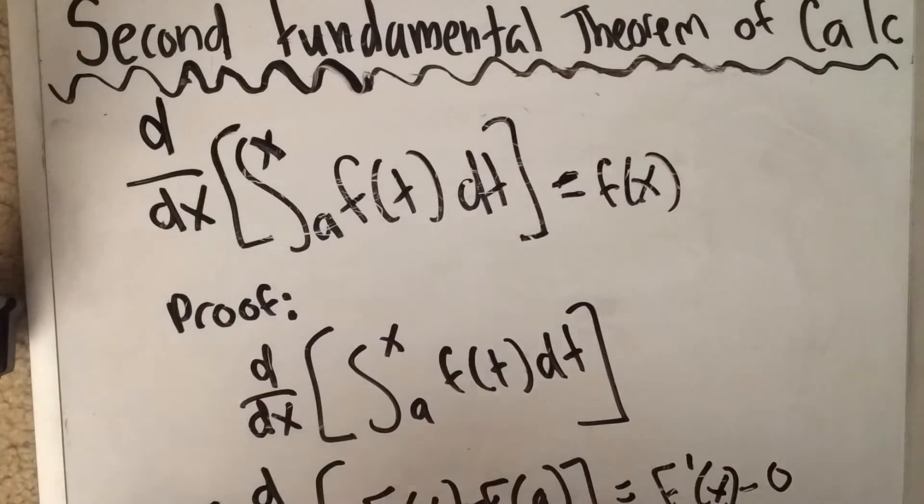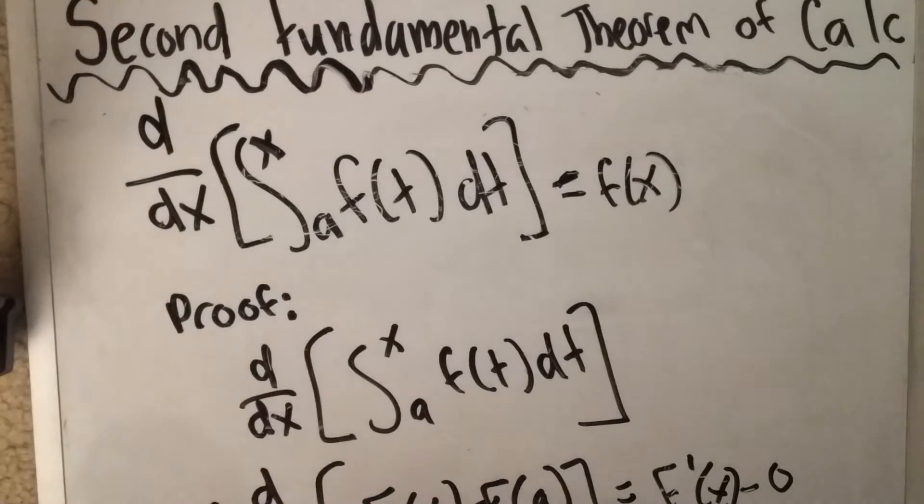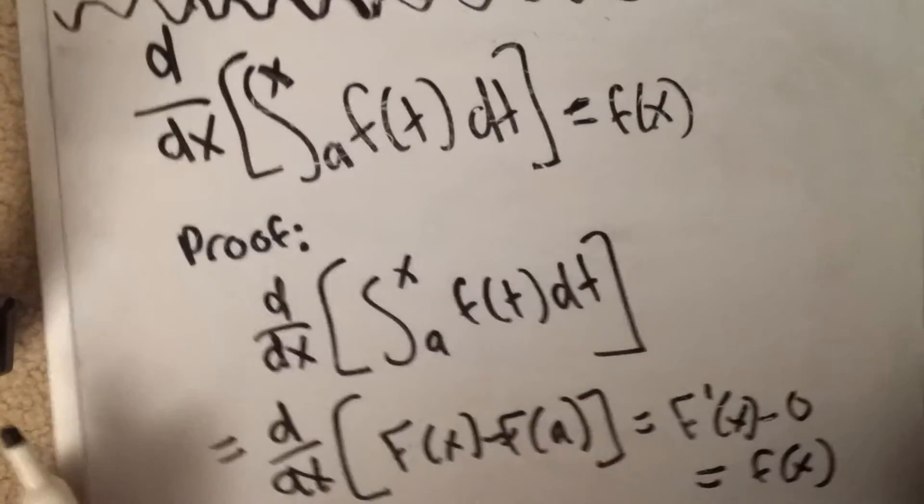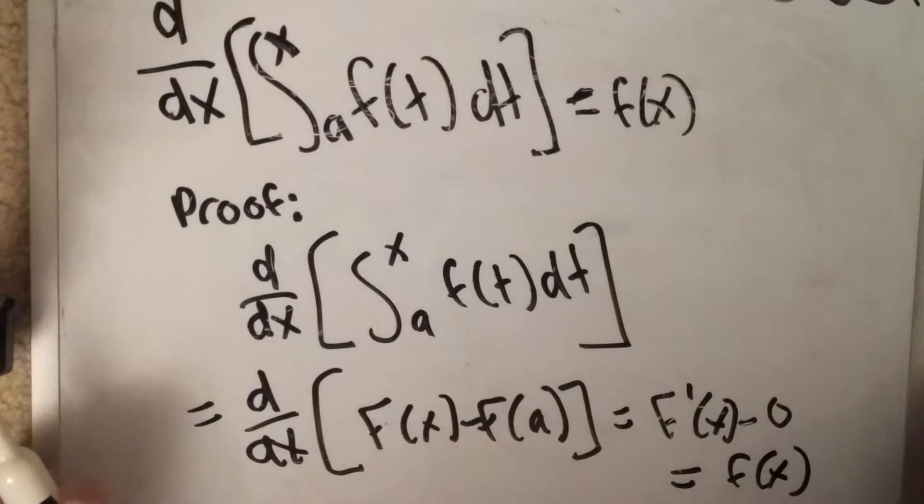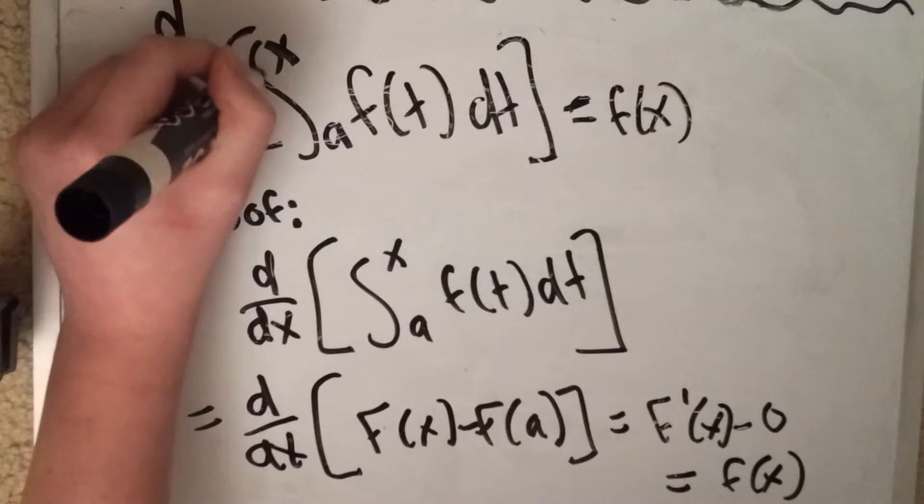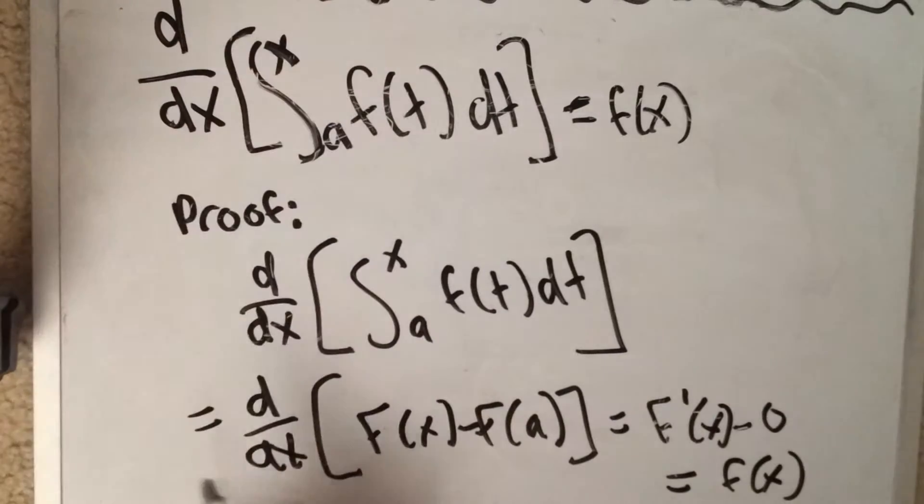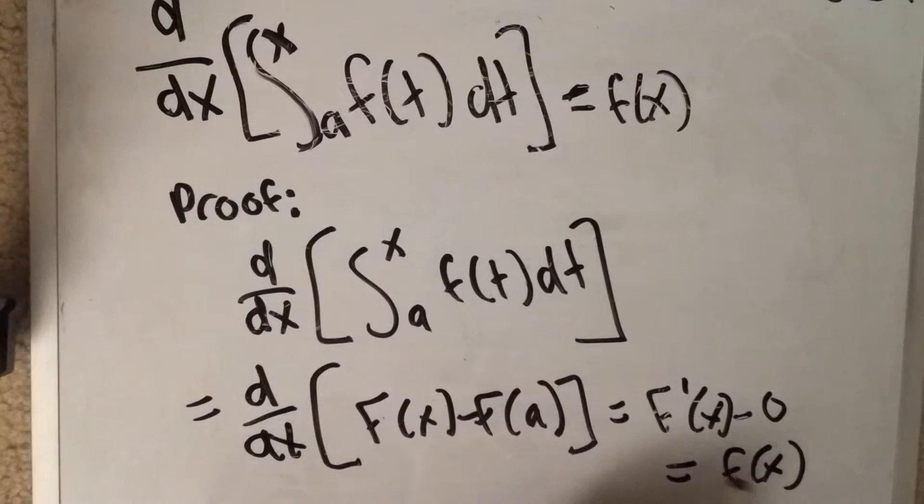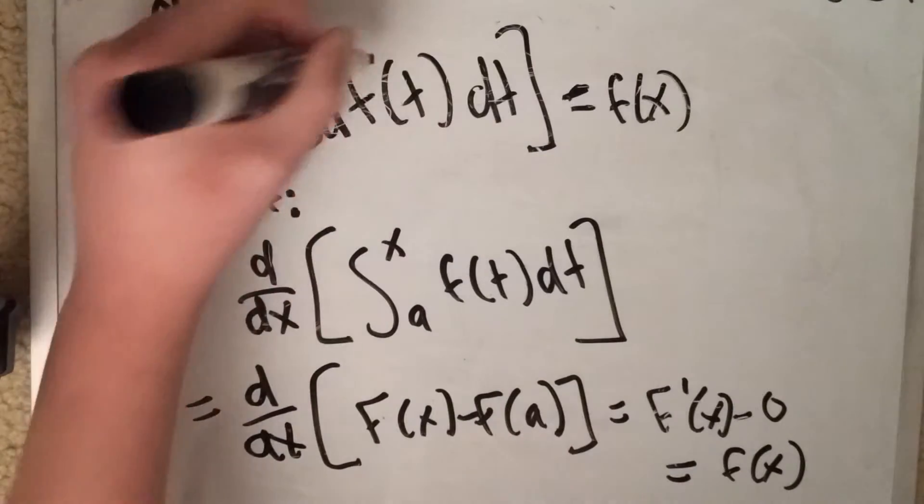So if you want to see a proof, we can use the original FTC1 to prove it. So if we plug it in our interval x and a, we will eventually get f of x minus f of a, and this is just going to equal the original equation or little f of t,